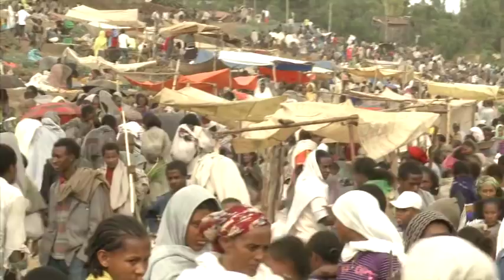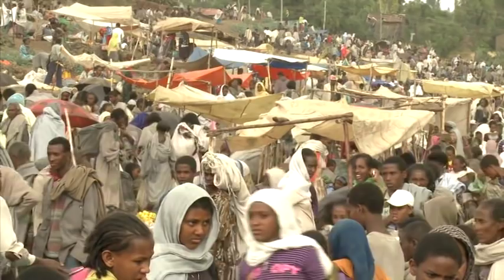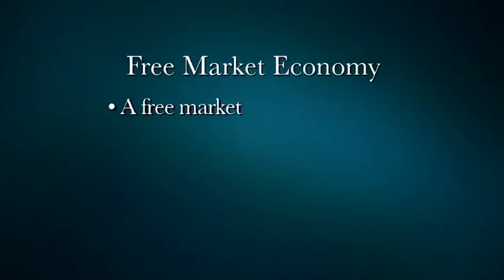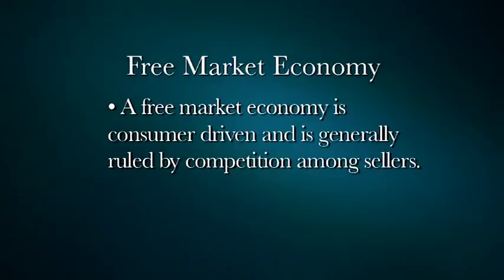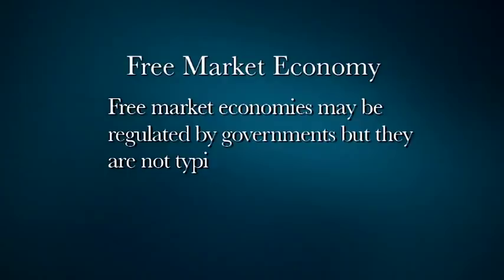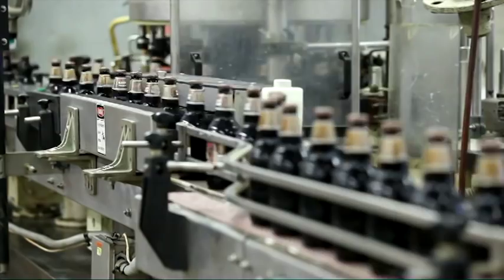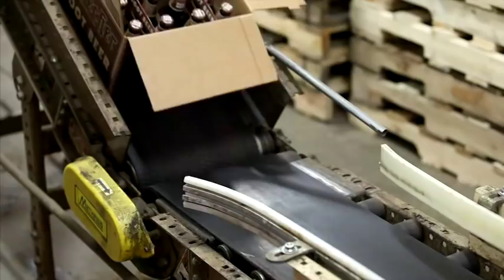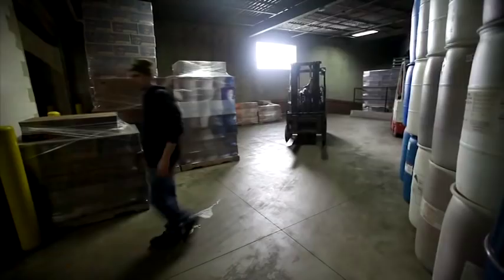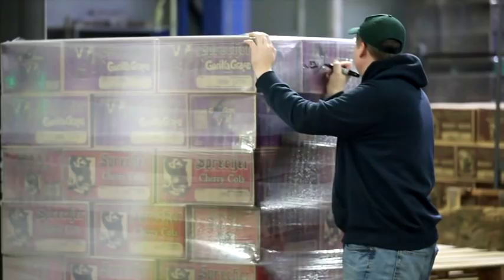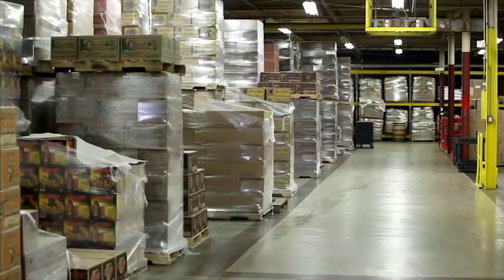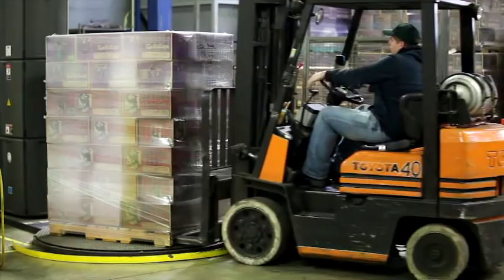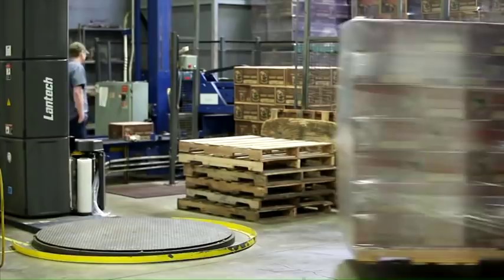A free-market economy is one approach to organizing economic activity. A free-market economy is consumer-driven and is generally ruled by competition among sellers. Free-market economies may be regulated by governments, but they are not typically controlled by one person or organization. In a free-market economy, companies decide how much to produce on an annual basis. Companies create a budget to determine their manufacturing costs, including the price of raw materials, equipment, labor, management, and employee benefits such as health insurance or pensions. Once a company knows the costs of producing their goods or services, they can then determine how much money to charge for their products. For for-profit businesses in a free-market economy, the price needs to be competitive, cover the costs of production, and make a profit.